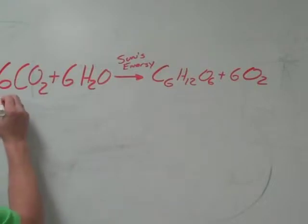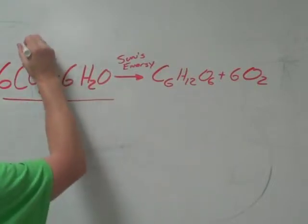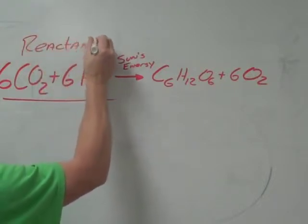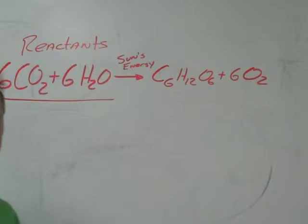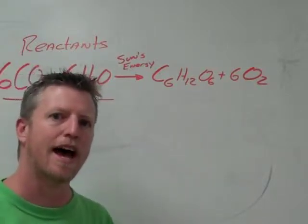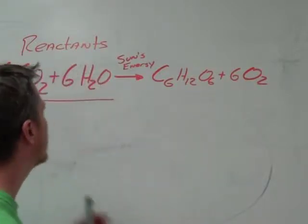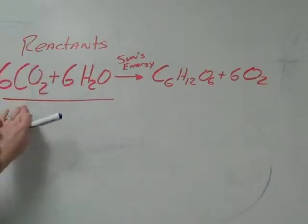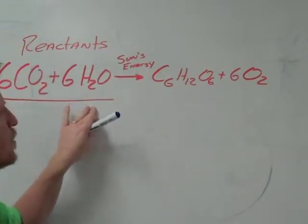So one thing I want us to understand is everything on the left side of the arrow are called reactants. Now, that's pretty easy to remember because reactants are the things that react when we get them together. So the reactants of this particular equation are carbon dioxide and water, H2O.